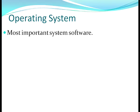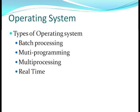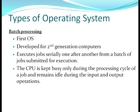The most important system software is the operating system. You must have heard of Windows and DOS — these are operating systems. It acts as an interface between the user's programs and the computer's components, helping in the execution of programs and forming an interface between the user and the computer. Types of operating systems include batch processing, multiprogramming, multiprocessing, and real-time operating systems.